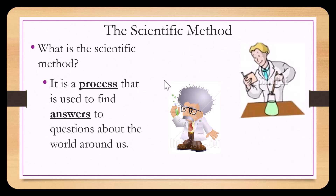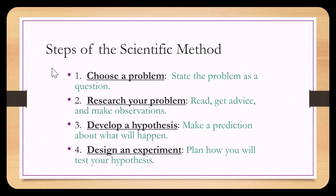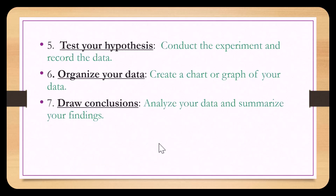The scientific method is a process used to find answers to questions about the world around us. First, choose a problem and state it as a question. Then research the problem — read, get advice, and make observations. Next, develop a hypothesis by making a prediction about what will happen. Then design an experiment to test your hypothesis. Conduct the experiment and record the data. Next, organize the data by creating a chart or graph. Finally, draw a conclusion to analyze your data and summarize the findings.